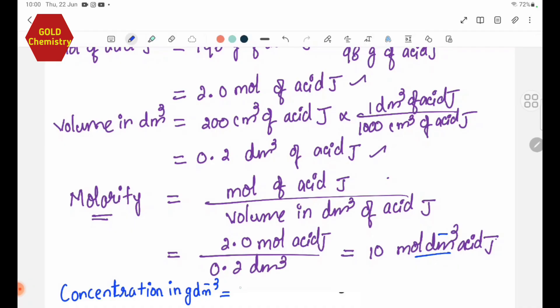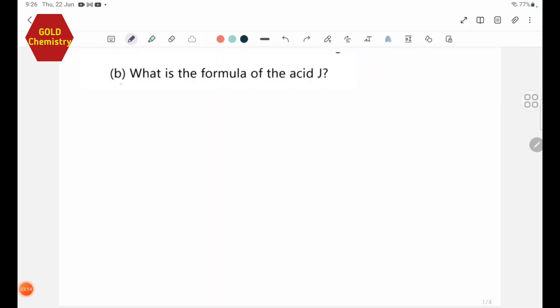Next step. For Part B, what is the formula of acid Z? The formula of acid Z is H2SO4.